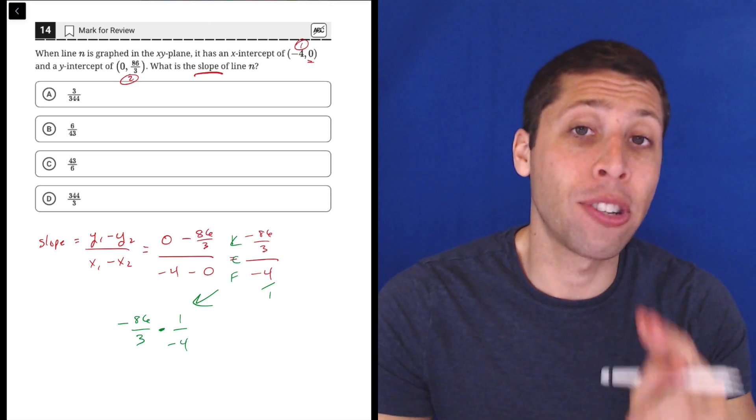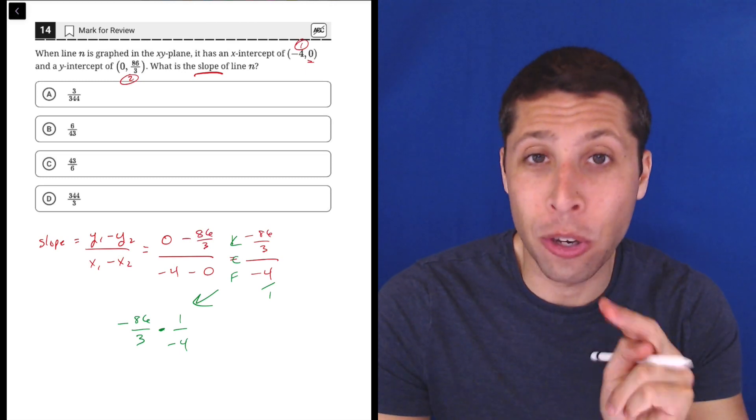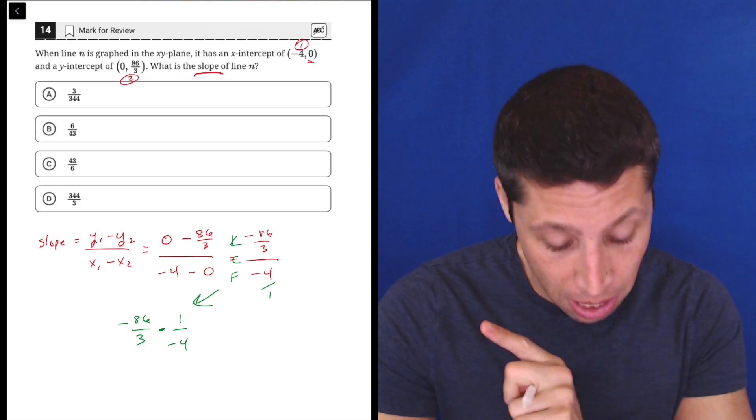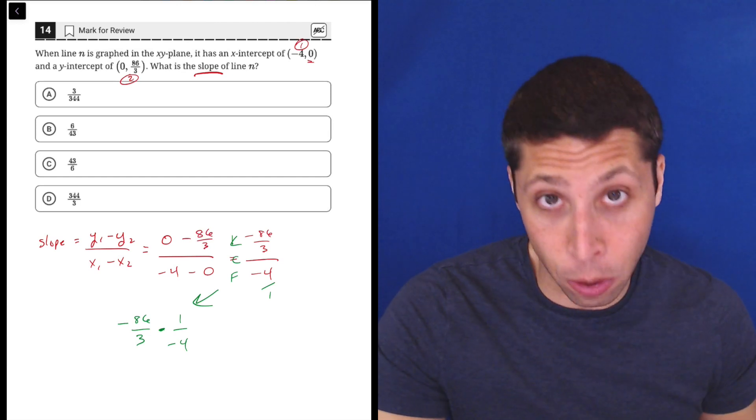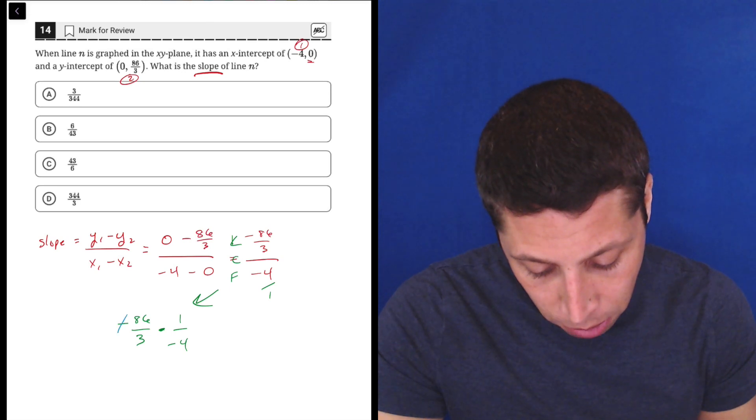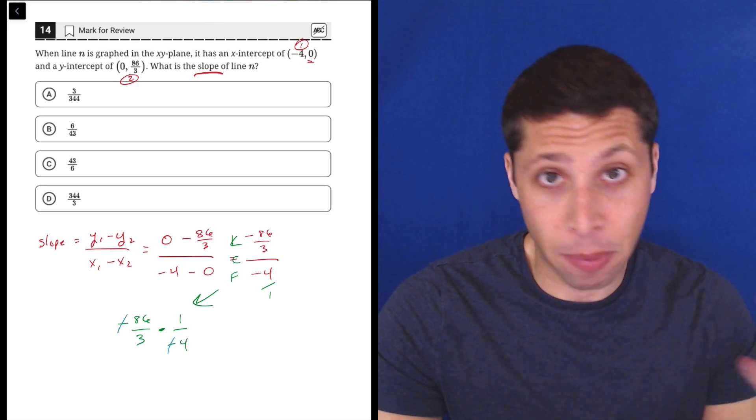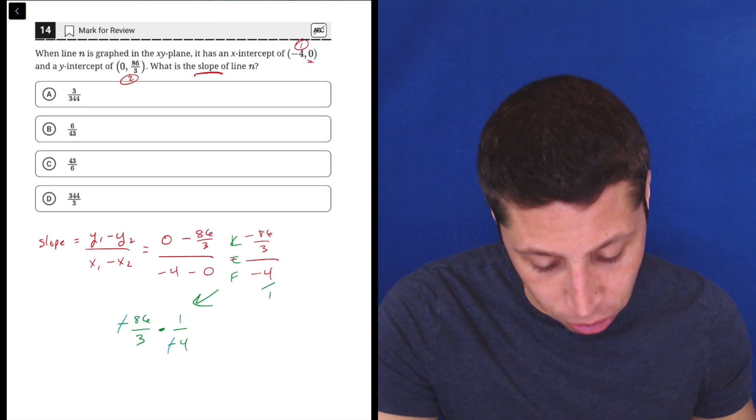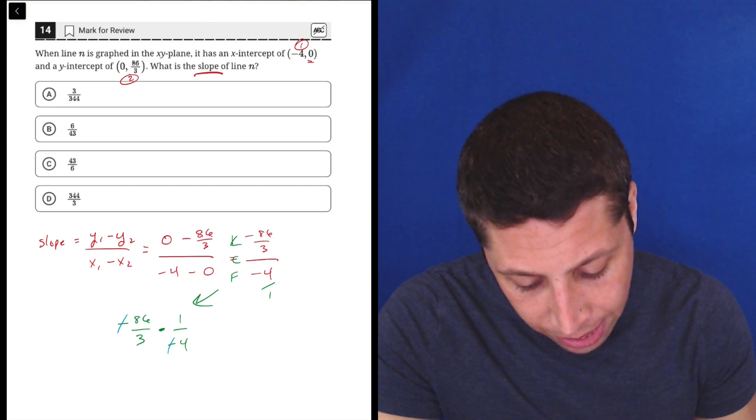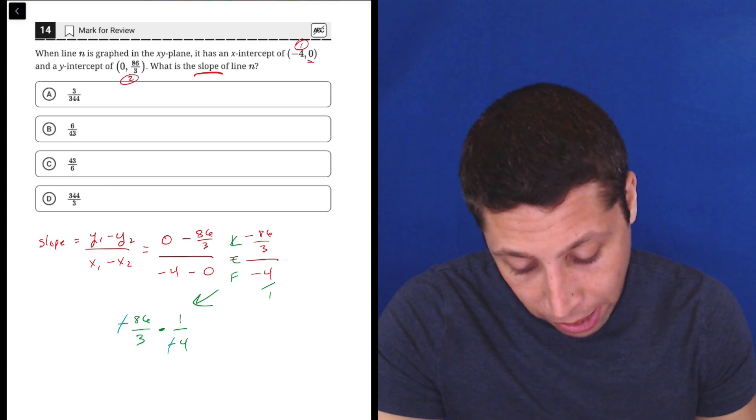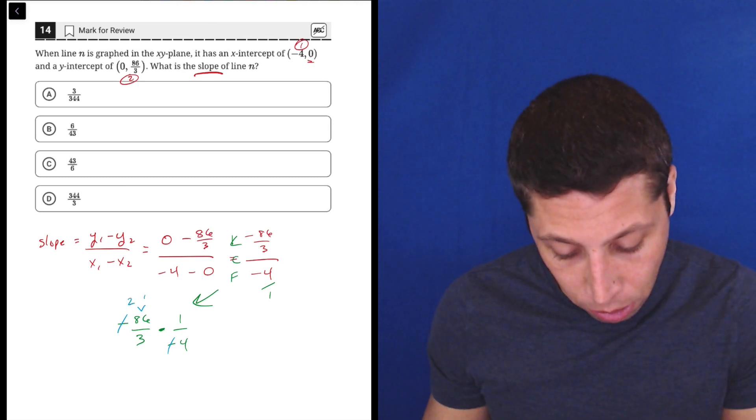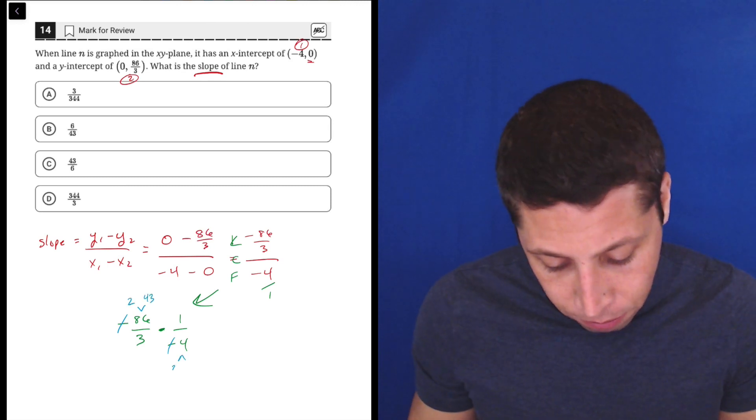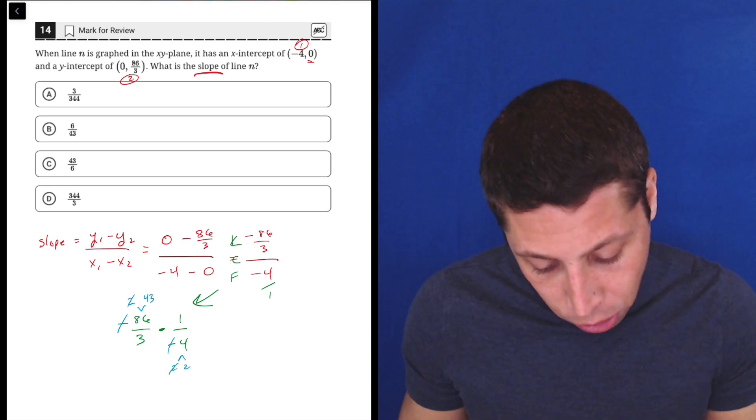Now, multiplication of two fractions is the simplest thing that you can do with fractions. Just multiply across the tops, multiply across the bottoms. But we can also simplify as we go. So first of all, I'm going to get rid of these two negatives, because two negatives make a positive. So we can get rid of that with multiplication. I also know that 86 is going to be divisible by at least 2. So I'm going to say, okay, 86 is 2 times what? 43? And 4 is 2 times 2. So I can get rid of one of the 2s.